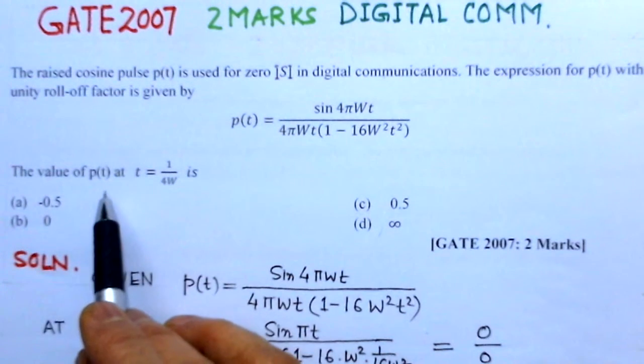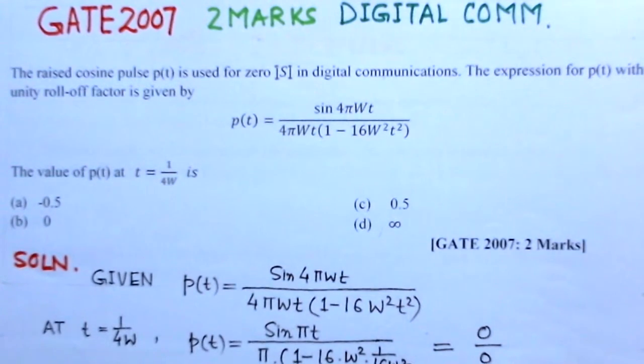And so we have to find the value of P(t) at t is equal to 1 by 4W. We will see this.